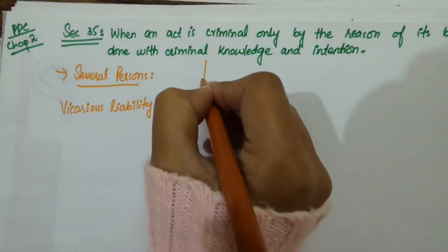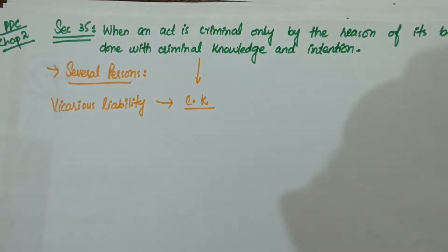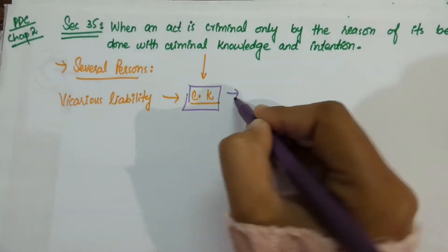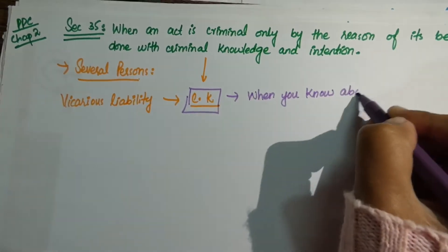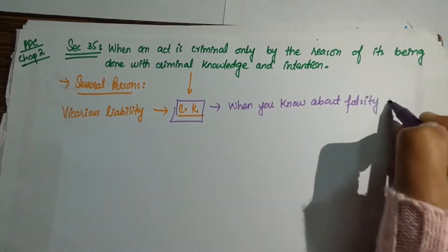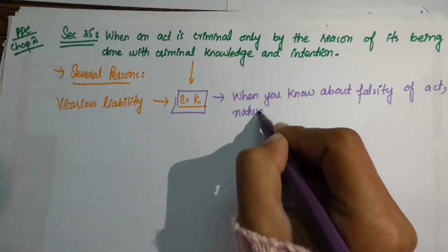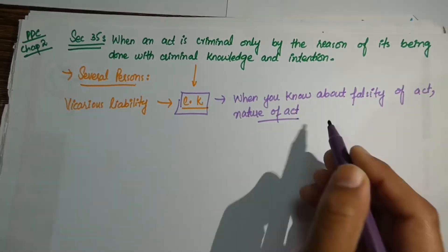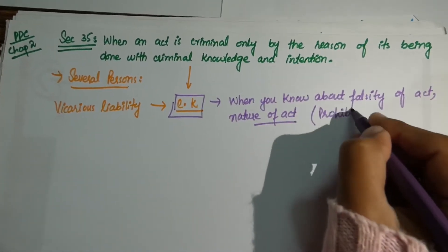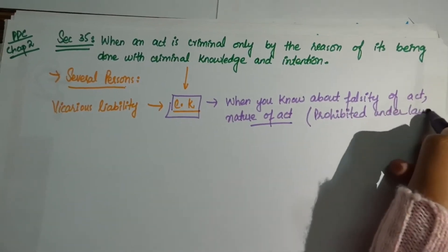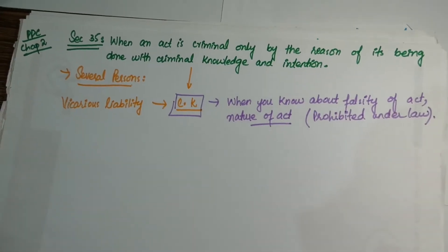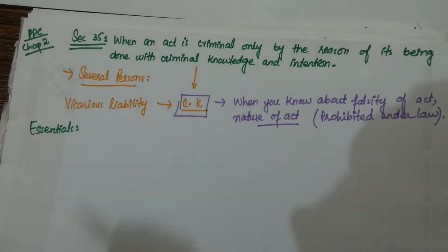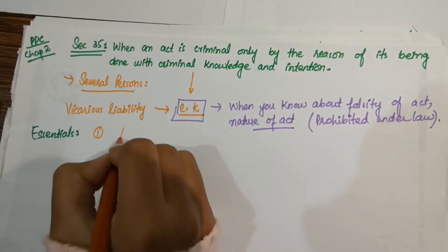Here vicarious liability comes on the person due to criminal knowledge. Person is vicariously liable due to criminal knowledge. Criminal knowledge means when you know about the falsity of act, when you know about the nature of act, when you know that one thing is wrong or wrongful act prohibited under law but not allowed by law.